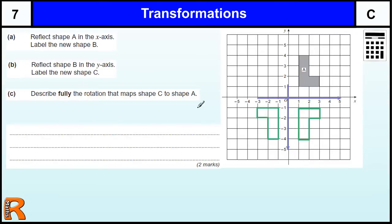I shouldn't really label these, you've got to label that one B and that one C. Now describe fully the rotation that maps C onto shape A.